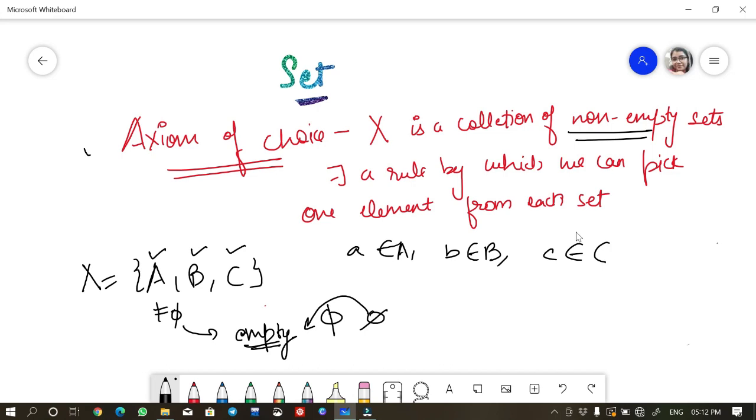X is a set of non-empty sets. There is a rule by which we can pick one element from each set. So I think this is a simple result you can understand. So let's move to the next topic now.